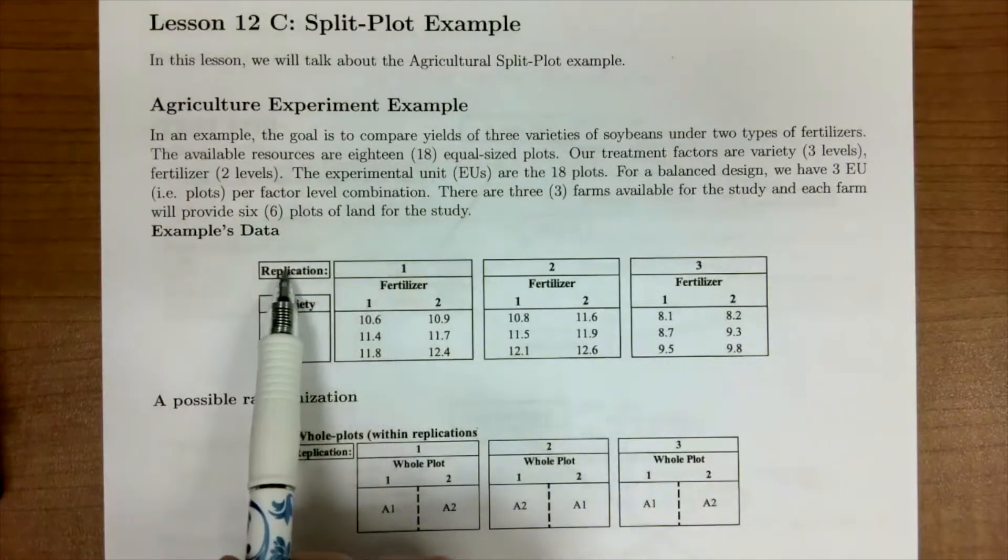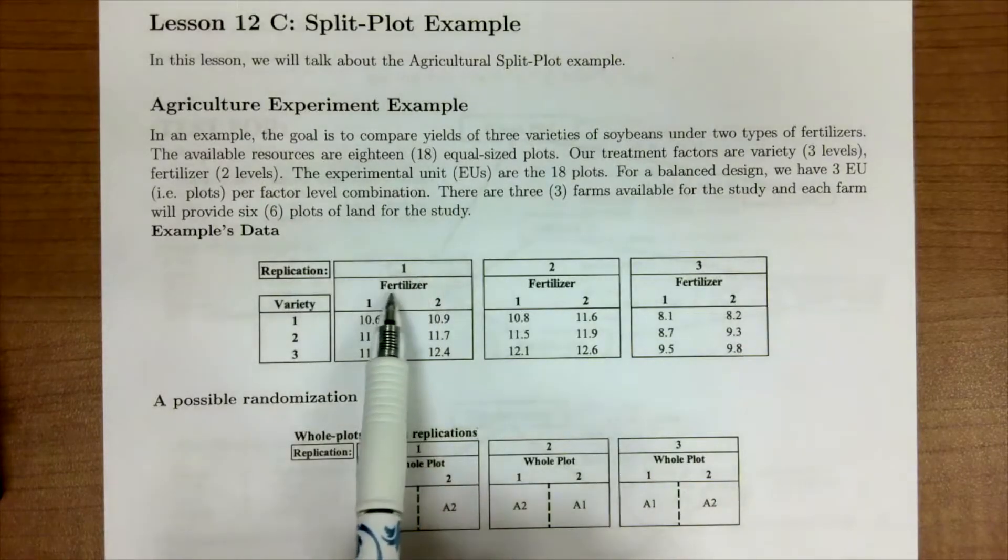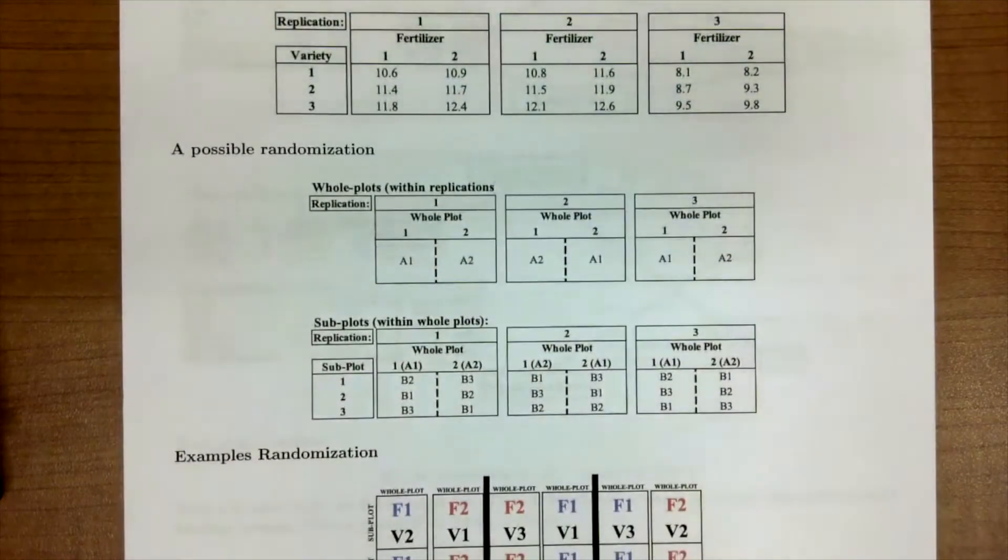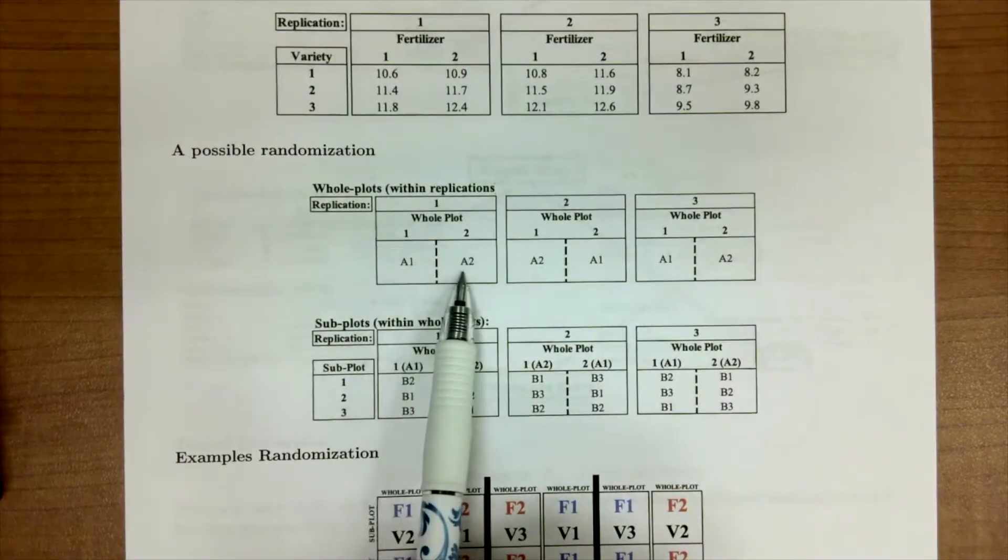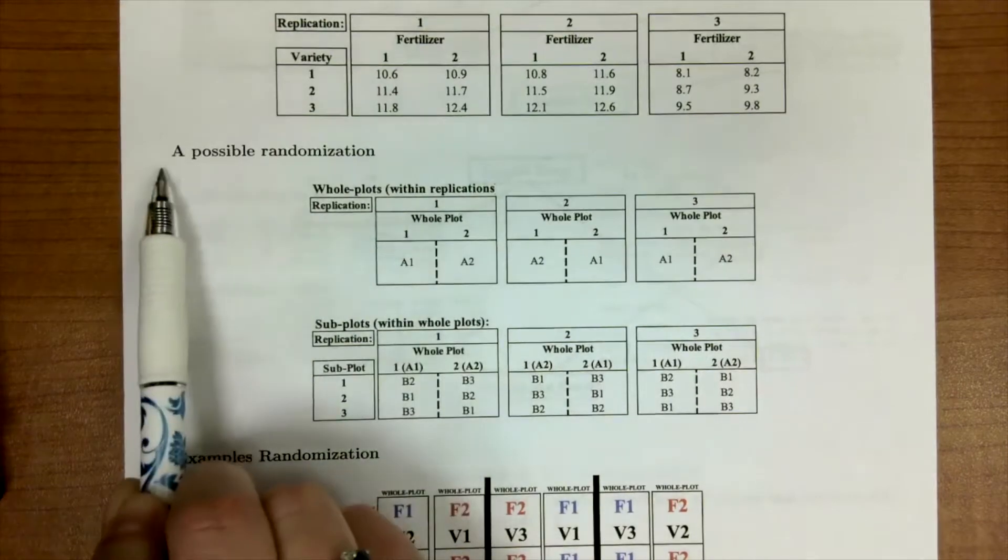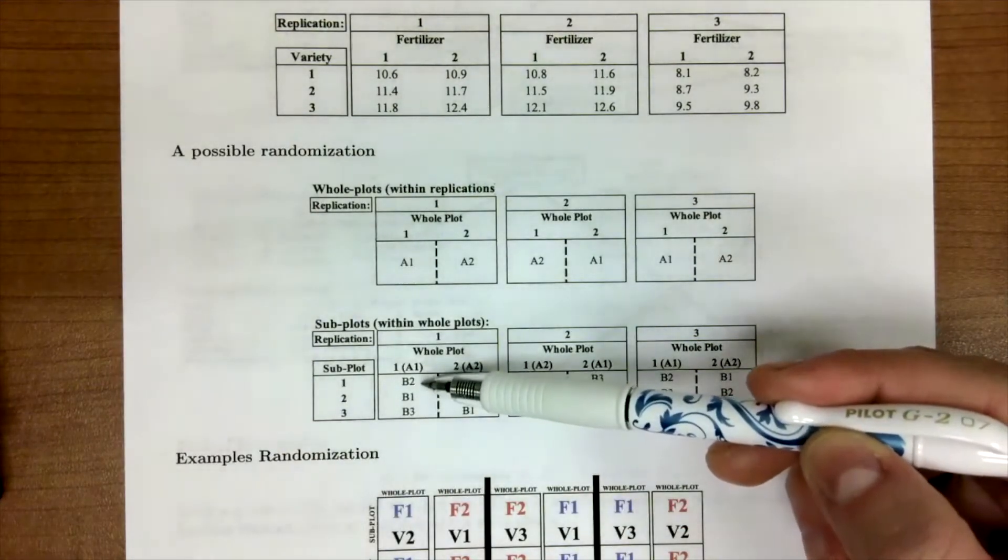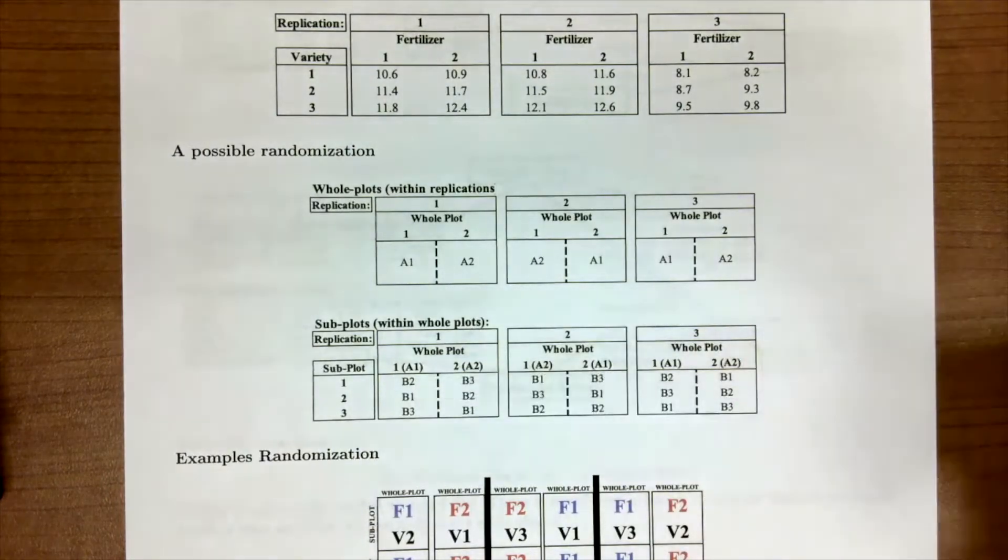Replication, or you could have wrote farm here, so farm one, fertilizer one, and then your variety. There are different ways you could have randomized, meaning instead of having a one here and a two here, it could have been a two and a one. Same idea here - if we resampled one through three, this could have been different.